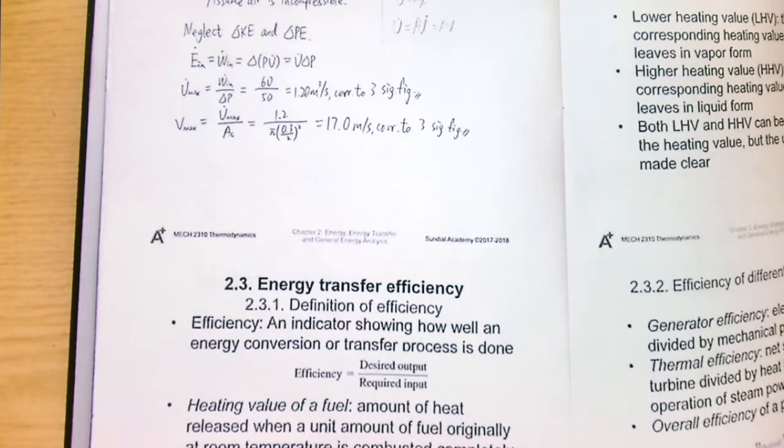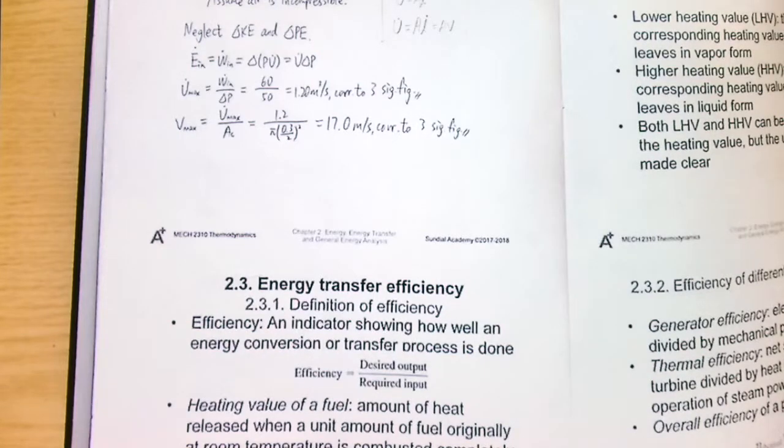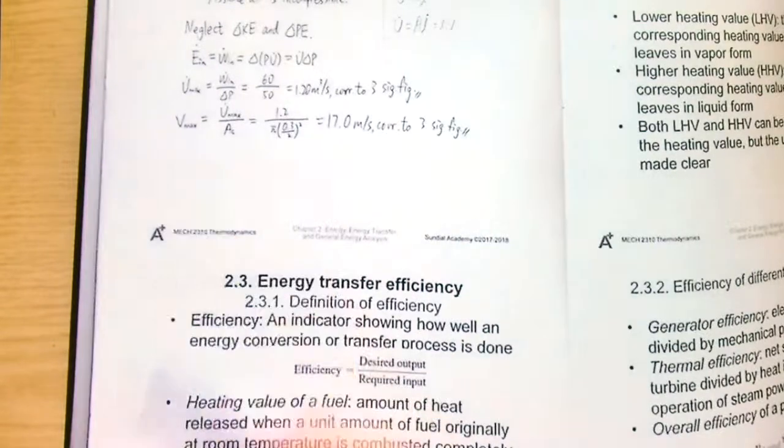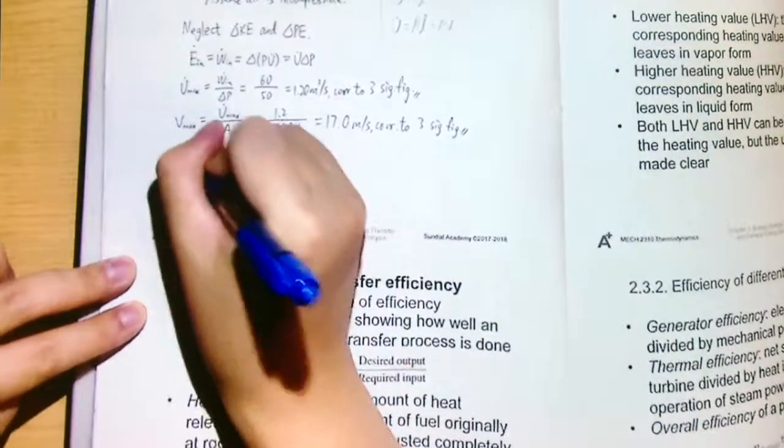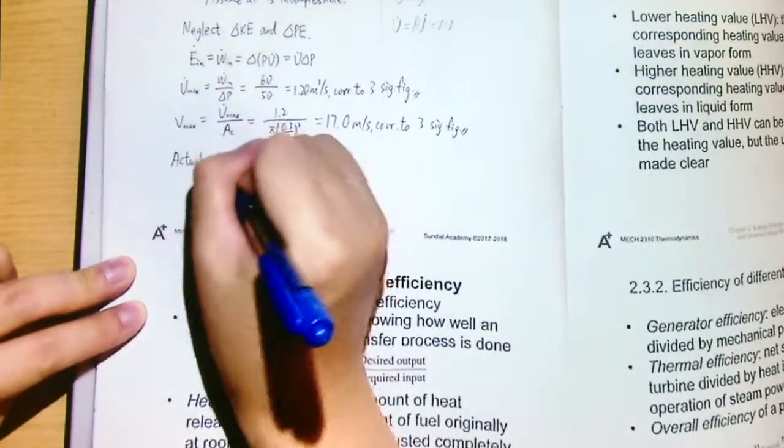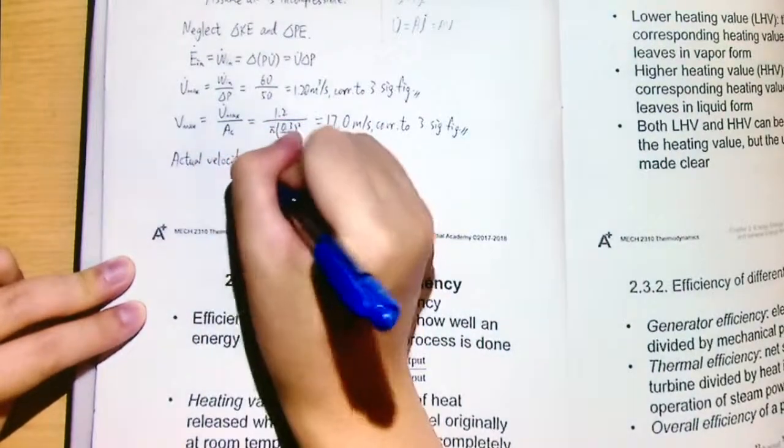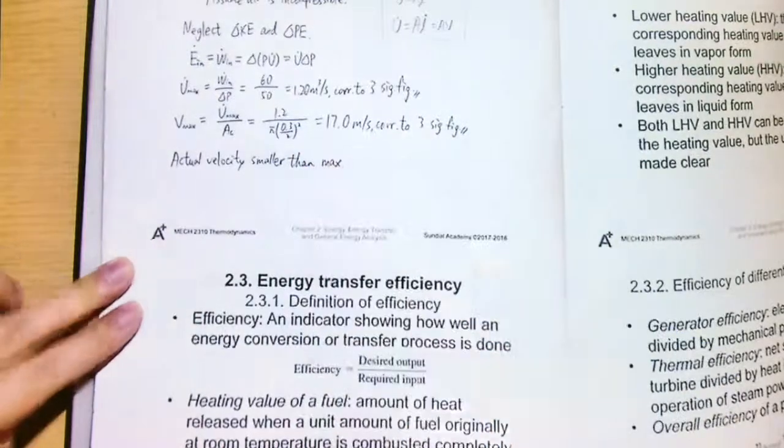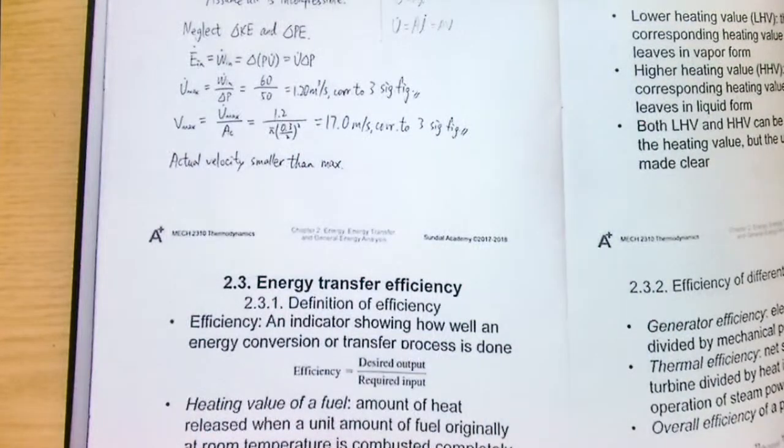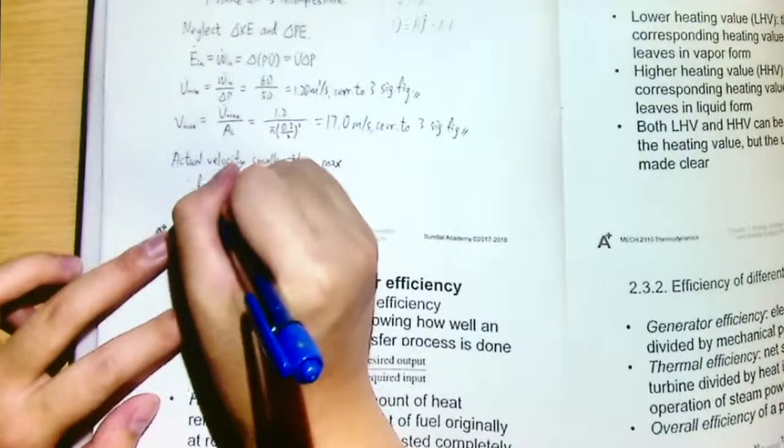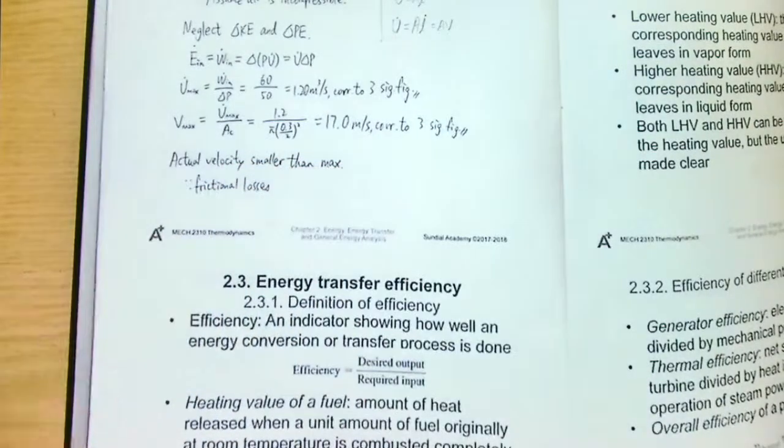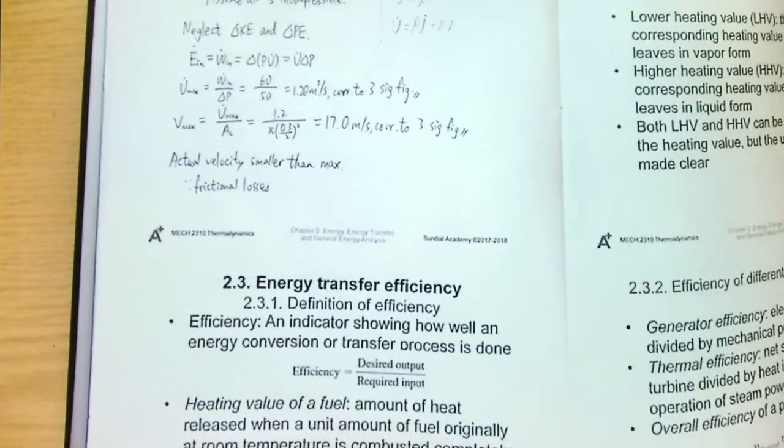Here we have determined the average flow velocity. But you can see that we have a subscript max here. Why is it a max? Because the actual velocity would be smaller than the maximum, because there should be some of the frictional losses and other kinds of losses. Mainly should be frictional losses.